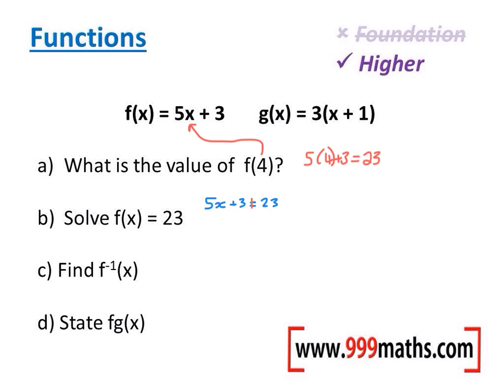So I'll put my line down and just solve it like a normal equation by subtracting 3 off both sides to leave me with 5x on the left and 20 on the right, then dividing by 5 on both sides to give me x equals 4. And we actually did know that because in part a we just put 4 into that equation and got 23 out, and part b has just asked what number do you put in to get 23 out.